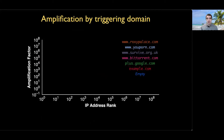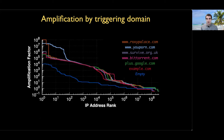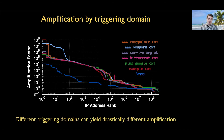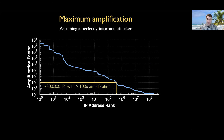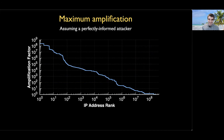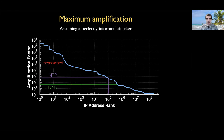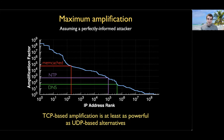We also studied results by triggering domain and found many still elicit enormous amplification. The choice of domain affects the amount of amplification we can get, and most of them trigger huge numbers of IP addresses — all doing considerably better than the control scan in blue, where we sent no domain at all. This raises an interesting question: how well could a perfectly informed attacker do who knew exactly what to send to every middlebox? That graph shows over 300,000 IP addresses with greater than 100x amplification. You can also see how many IP addresses exceed the UDP amplification numbers for DNS, NTP, and memcached. Overall this shows that TCP-based amplification is at least as powerful as its UDP-based alternatives.